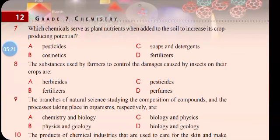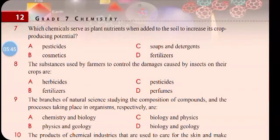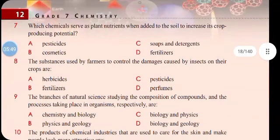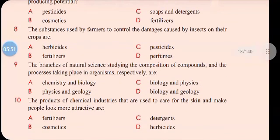Number eight: the substance used by farmers to control the damage caused by insects on their crops are — a) herbicide, b) fertilizer, c) pesticide, d) perfumes. The correct answer is c) pesticide. We use herbicide when dealing with damage caused by different herbs such as weeds, but here it refers to damage caused by insects, so the correct answer is pesticide.